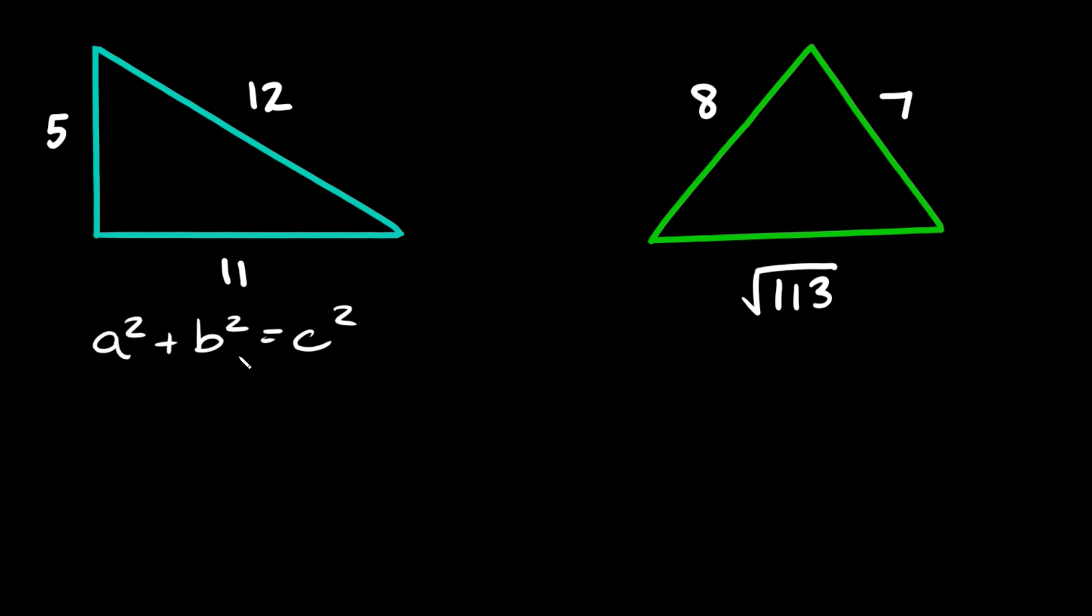So let's try a couple examples here starting with this one on the left. Remember, a and b are the two shorter sides of your triangle and c is the longest side. Here we're going to plug in 5 and 11 for a and b. So we're going to get 5² + 11² = 12².